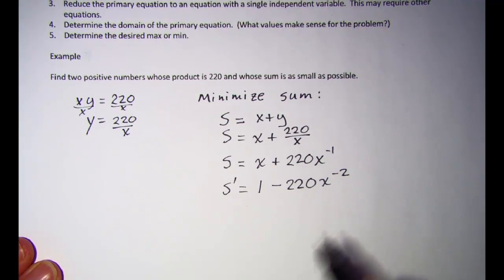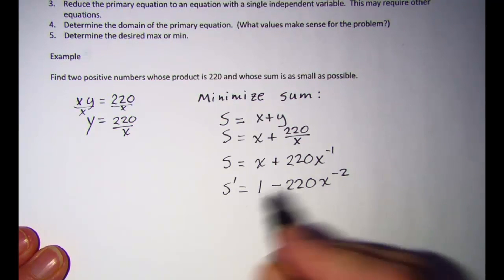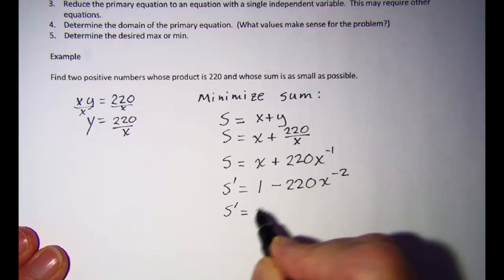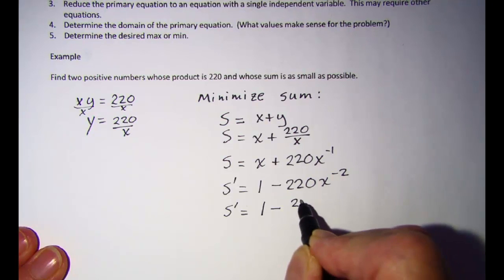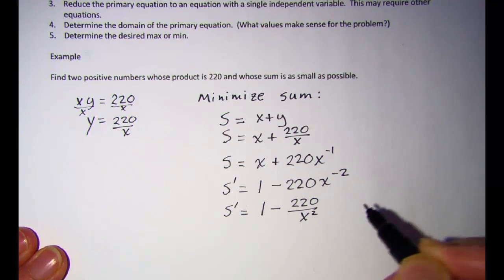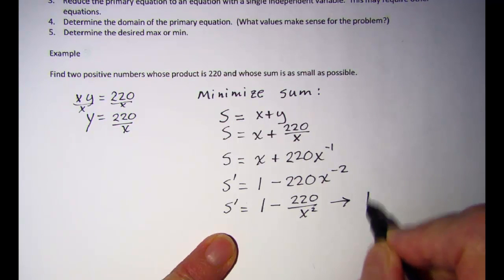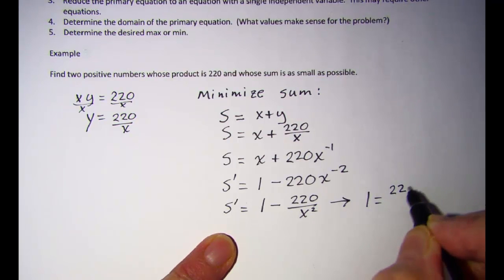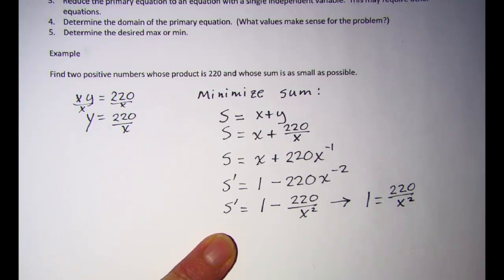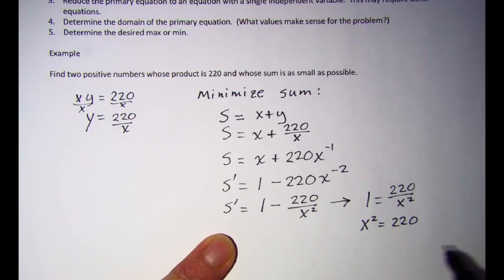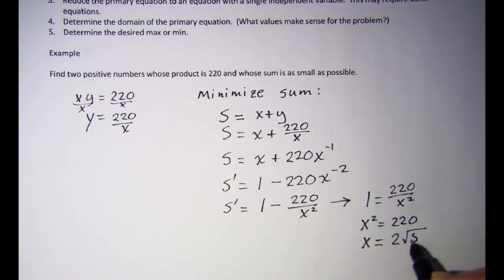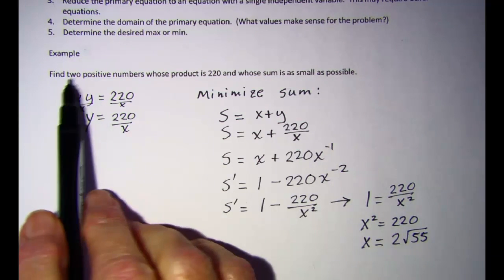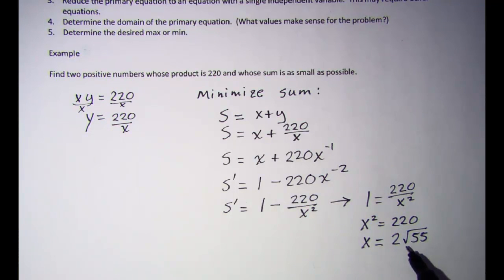To set this equal to zero I'll write it back with a positive exponent, so s prime equals 1 minus 220 over x squared. Setting this equal to zero gives 1 equals 220 over x squared, and that gives me x squared equals 220. Taking the square root of both sides, x equals 2 root 55. Normally we'd use plus or minus, but since we want two positive numbers I'll just use the positive root.